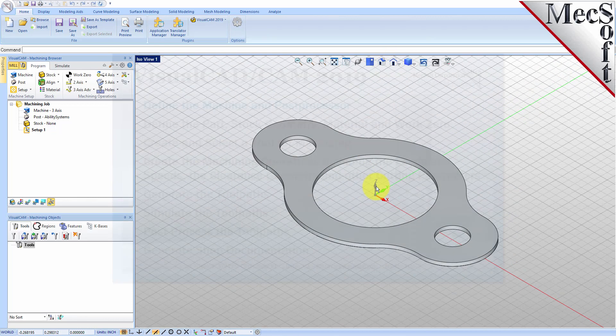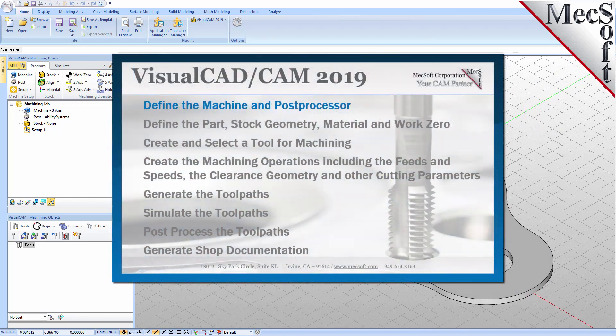We will perform the following basic steps in machining this model. First, we will define the machine and the post-processor to use. Then, we'll define the machine setup, including the stock geometry, material, and work zero.